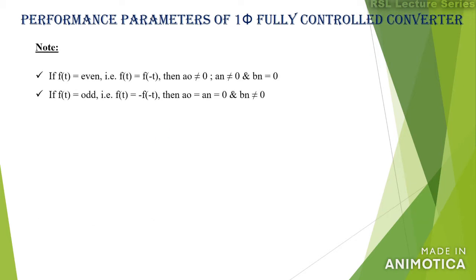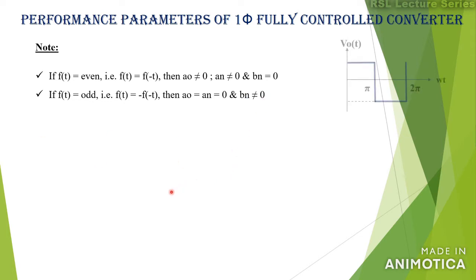One important point to note is that if f(t) is an even function, that is f(t) = f(−t), then a₀ will not be equal to 0 and aₙ will not be equal to 0. In the second case, if f(t) is an odd function, that is f(t) = −f(−t), then a₀ and aₙ will be equal to 0 and bₙ will not be equal to 0. In our case we have considered the odd function, that is f(t) = +Vm and f(−t) = −Vm, so we have to derive only bₙ.